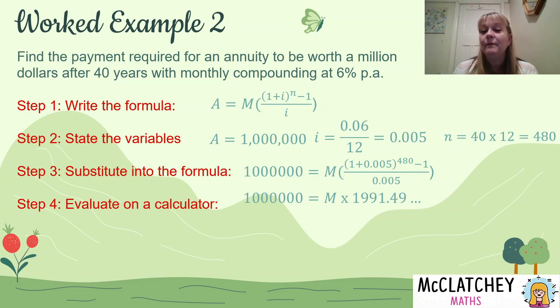And I'd press the equals button. Then I'd do a takeaway one, press the equals button. And then I divide by 0.005 and press the equals button. That's going to give me 1,991.49 with lots of decimal points. And then I'm going to divide both sides by that 1,991.49. So a million divided by that gives me my value for M.